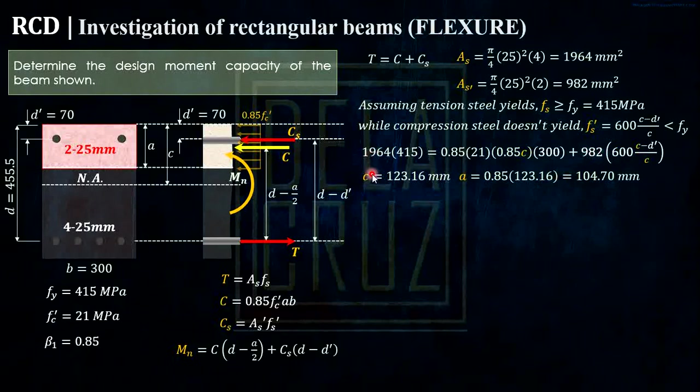Now, after we solve our C, we should prove our assumption. We need to prove two things: this one and also this one. Now, proving this tension steel yields, ito yung formula. And calculate that, our D is 455.5, our C is ito, and also our C here. So that is 1619 megapascal. And that is truly greater than FY, which is 415. And this assumption here is correct.